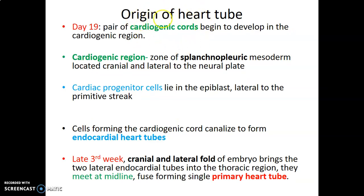Where do the heart tubes come from? At day 19, we have a pair of cardiogenic cords that develop at the cardiogenic region. This is a zone of splanchnopleuric mesoderm that is cranial and lateral to the neural plate — the neural plate being what will give us the brain and spinal cord. At the cardiogenic region, cardiac progenitor cells aggregate together. These progenitor cells are within the epiblast, lateral to the primitive streak. They form what is called a cardiogenic cord — a cylindrical structure of cardiac progenitor cells coming from the splanchnopleuric mesoderm.